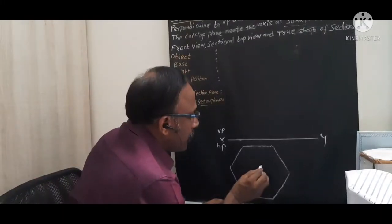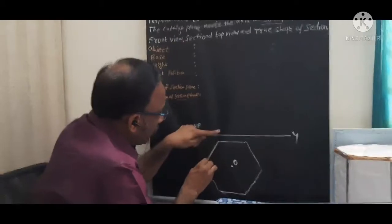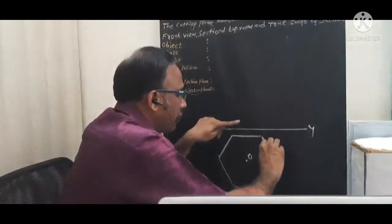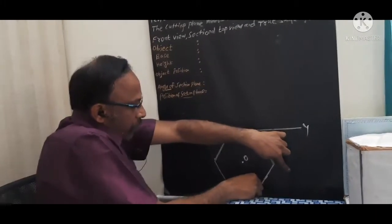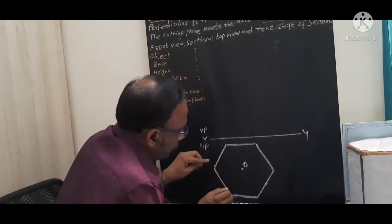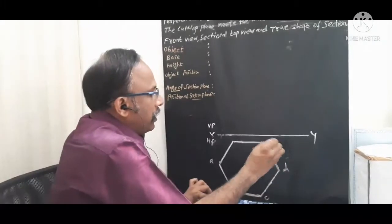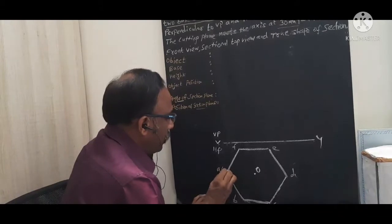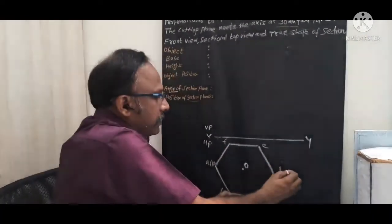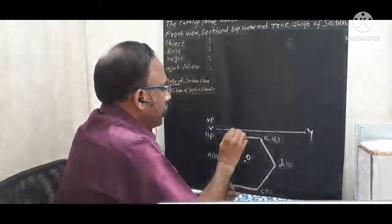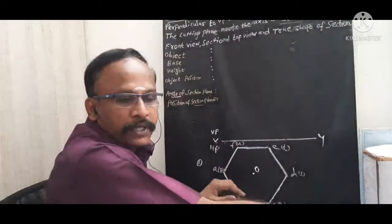Mark the center point O of the hexagonal prism. Now mark the corner points. The prism has top corner points and bottom corner points. Top corner points are marked as A, B, C, D, E, and F. Bottom corner points are marked as P, Q, R, S, T, and U. Step number 1 — simple top view for this solid — is now complete.